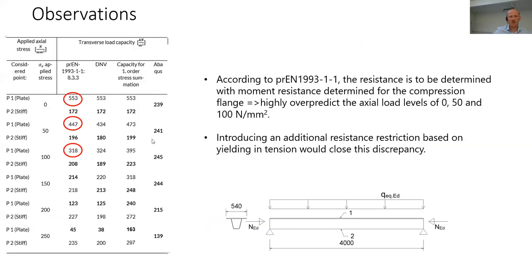Another important observation is that according to the preliminary standard, the resistance is to be determined with moment resistance for the compression flange, and this highly overpredicts the axial load levels for nil, 50, and 100 Newton per square millimeter as shown here. So we have a highly over-prediction compared with the ABAQUS. If you introduce an additional resistance restriction based on yielding in tension, that would close this discrepancy.